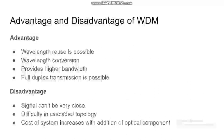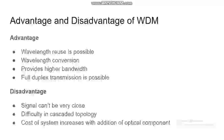Advantages and disadvantages of WDM systems. Advantages: wavelength reuse is possible, wavelength conversion is also possible, it provides higher bandwidth, and full duplex transmission is possible. Disadvantages: signals cannot be very close, there is difficulty in cascaded topology, and the cost of the system increases with addition of optical components.